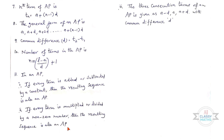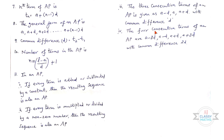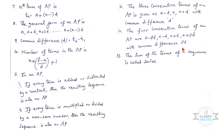Third point: The three consecutive terms of an AP are given as a − d, a, a + d with the common difference d. Fourth point: The four consecutive terms of an AP are a − 3d, a − d, a + d, a + 3d with the common difference 2d.